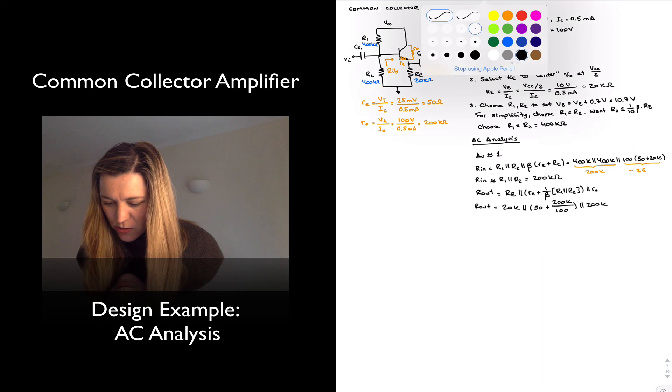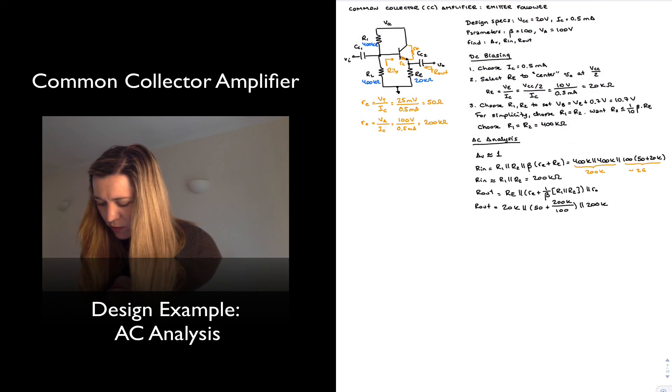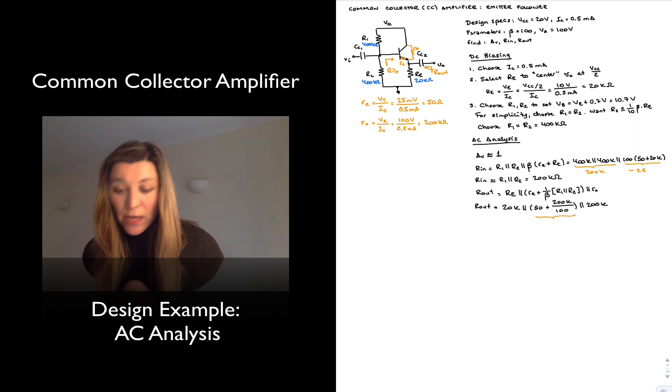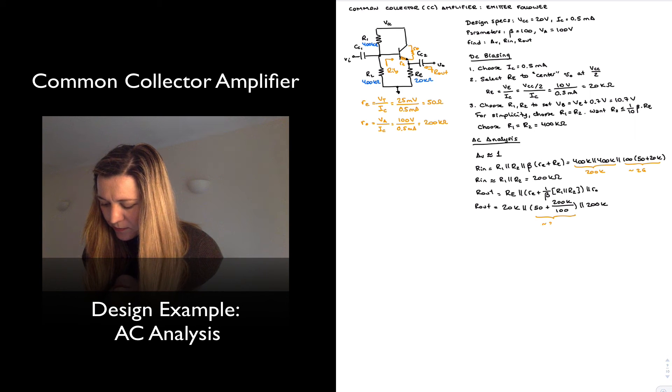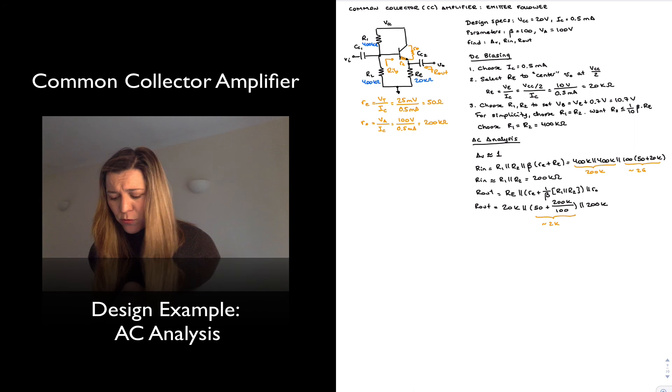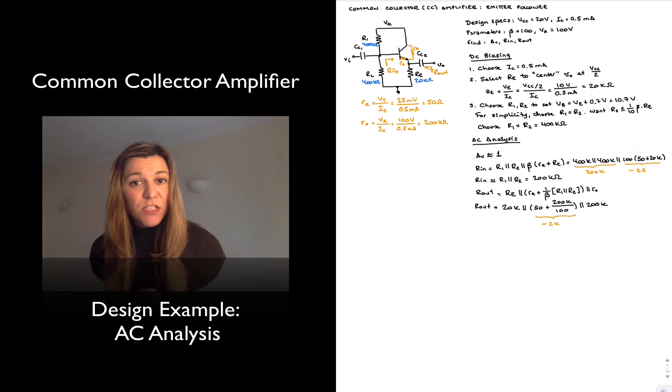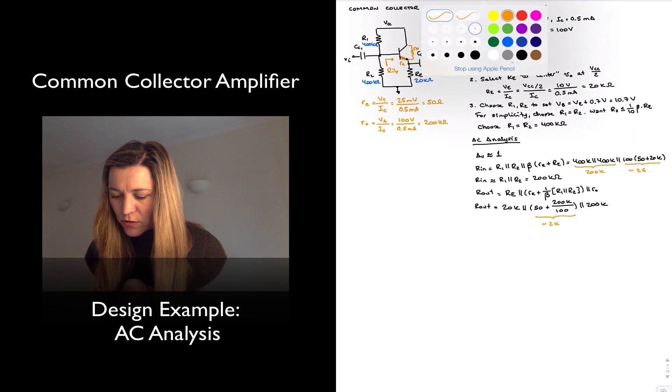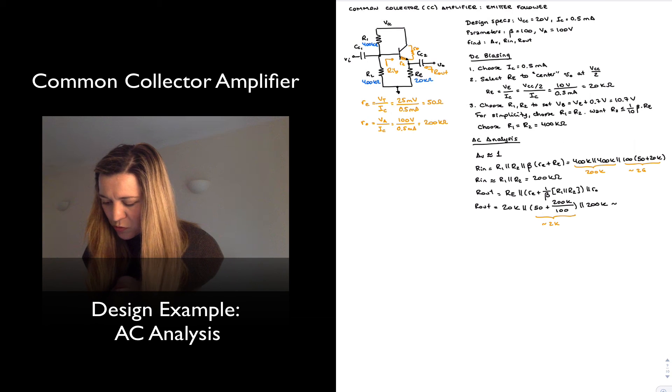This resistance here, we do the calculation. 200k divided by 100 is going to be 2k, 2k plus 50, I'm going to approximate it roughly as 2k. So I have 20k in parallel with 2k in parallel with 200k. The 2k resistance is much smaller than the others, so it's going to dominate the parallel combination, so I'm going to approximate the whole thing as being 2k.